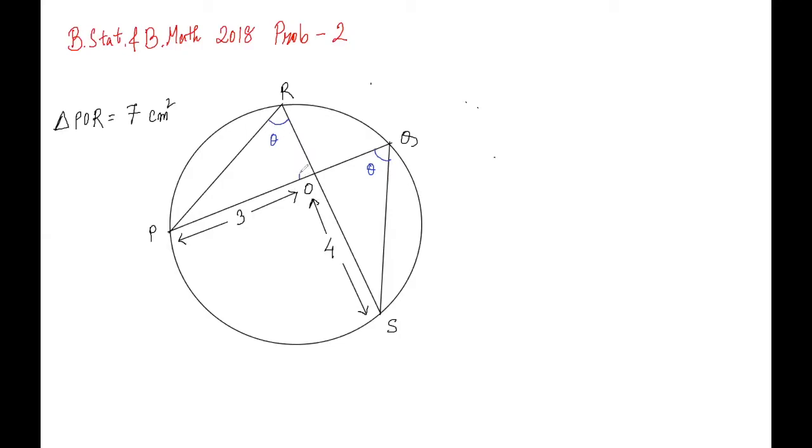You have the remaining angles to be equal, so these two triangles are similar. Let's use their similarity. Since they are similar, we get PO/SO = 3/4, which equals PR/QS and also RO/OQ.